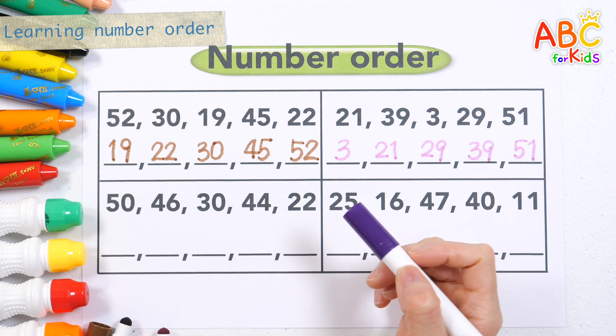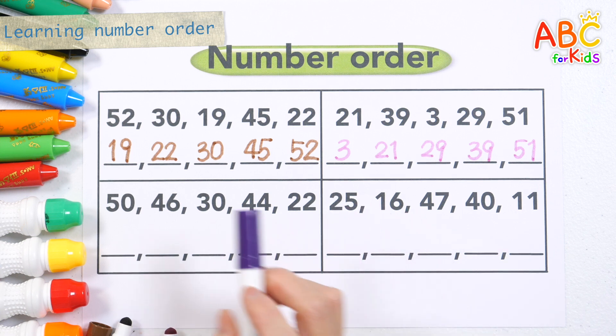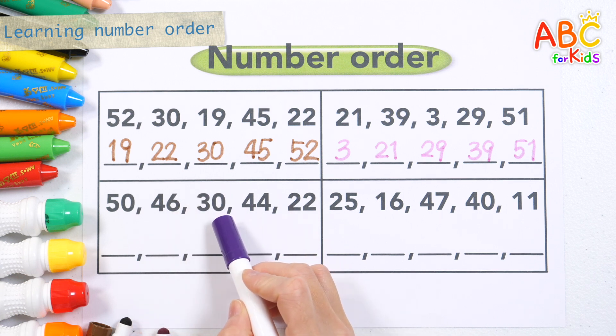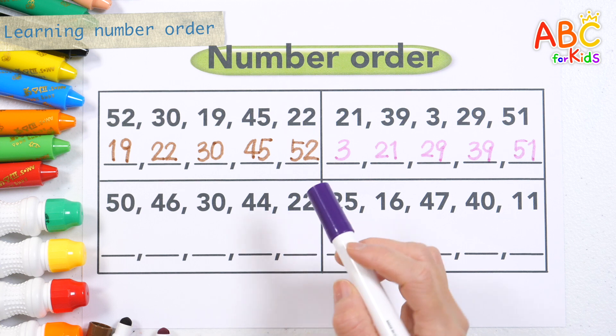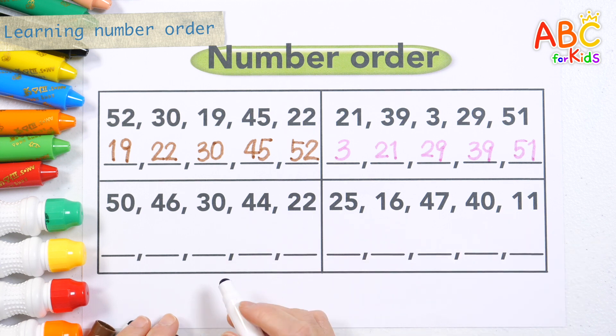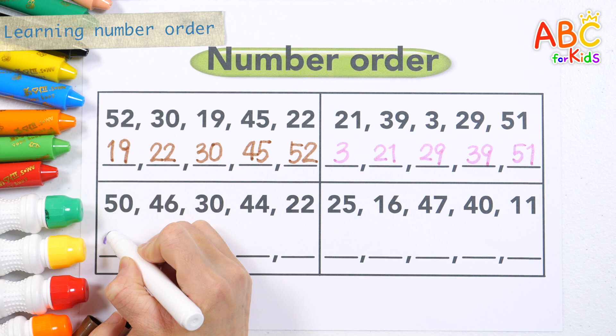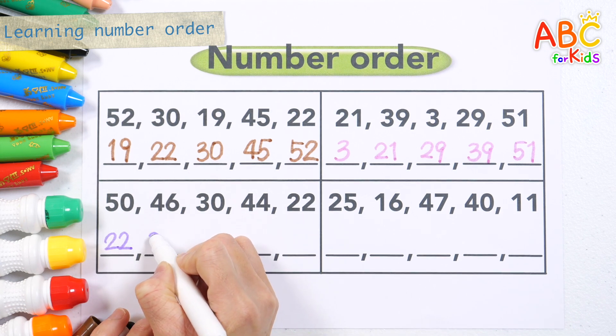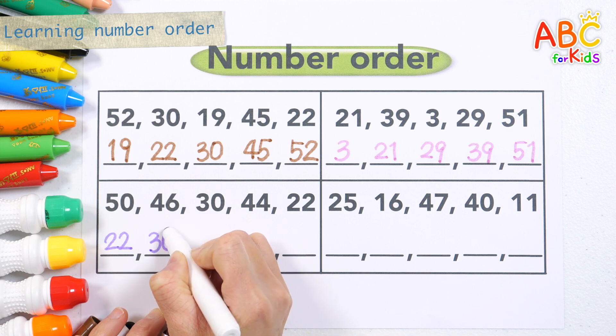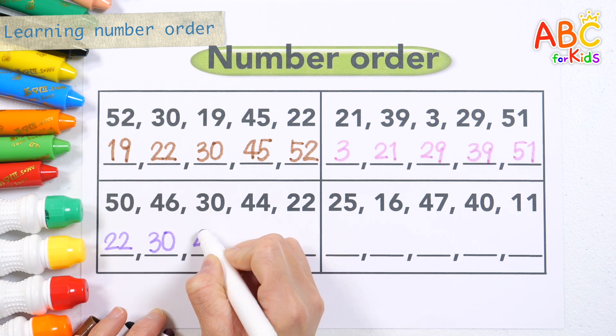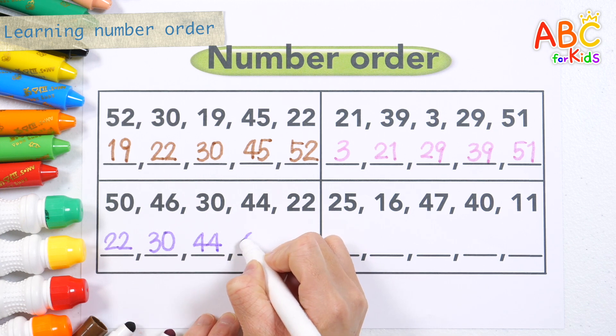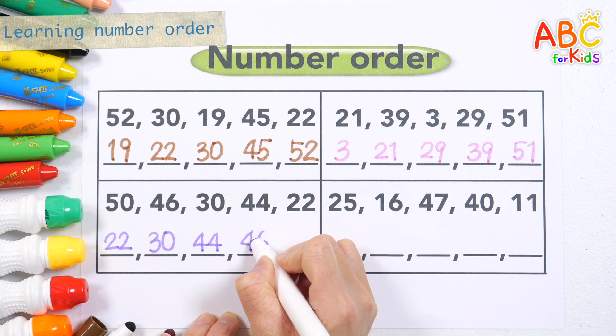Let's write the numbers in order with a purple pen. 50, 46, 30, 44, 22. Writing the numbers in order: 11, 16, 25, 40, 46, 50. All right!